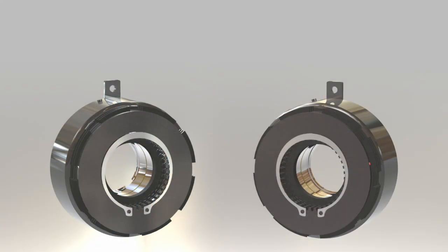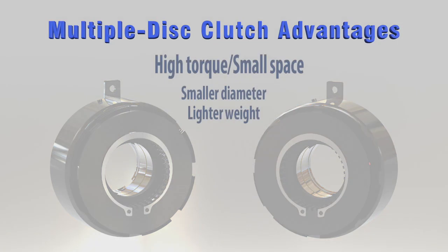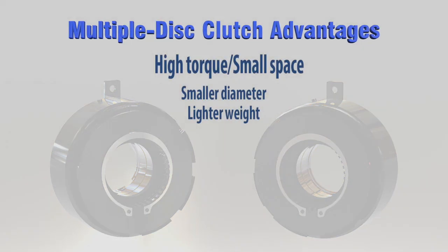Multiple disc clutch advantages. Because multiple disc clutches make multiple points of contact, torque is condensed, so the overall diameter is smaller than a traditional single plate clutch.